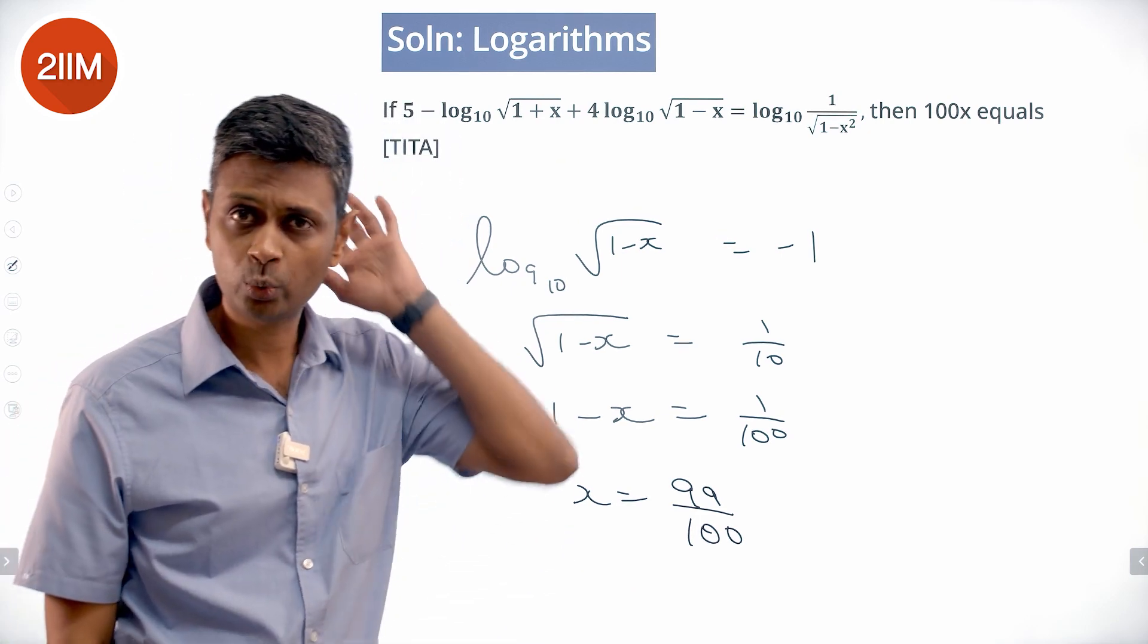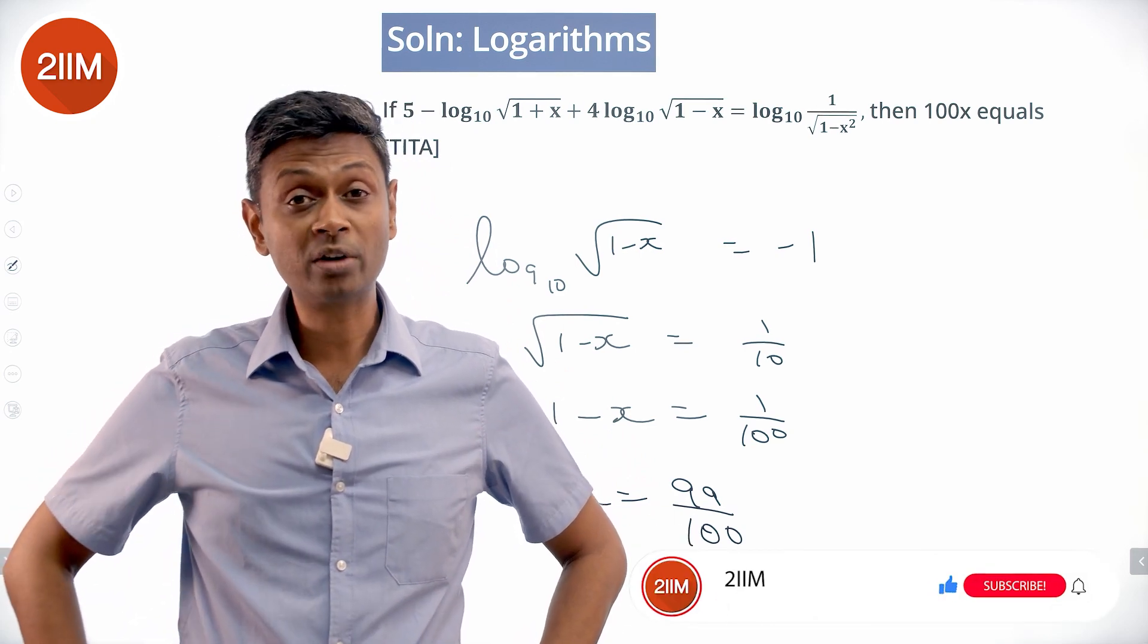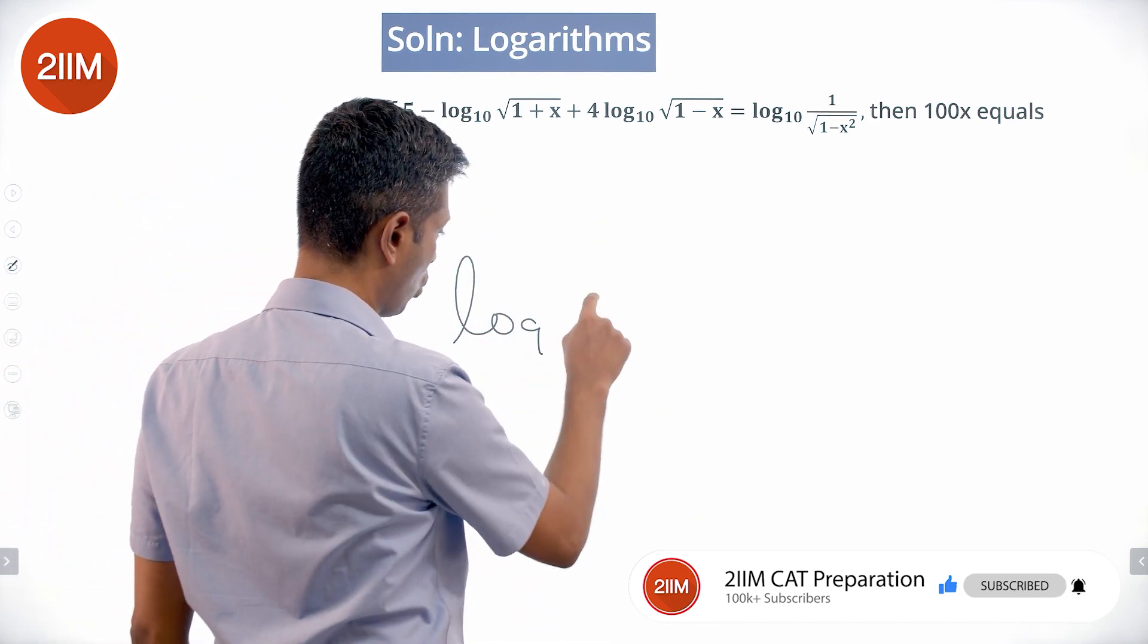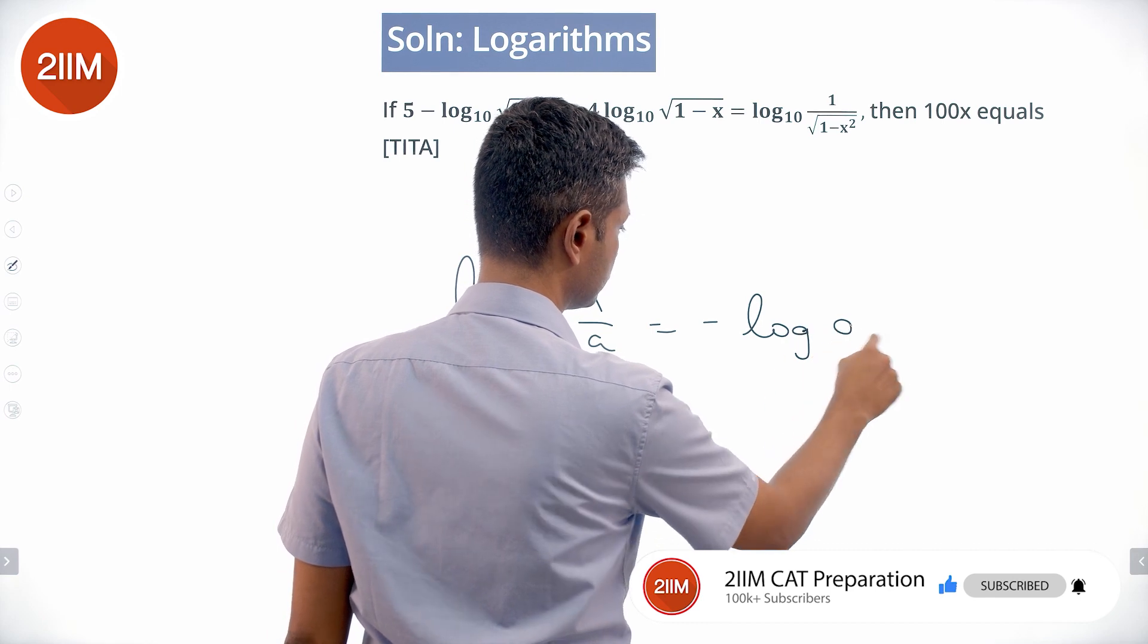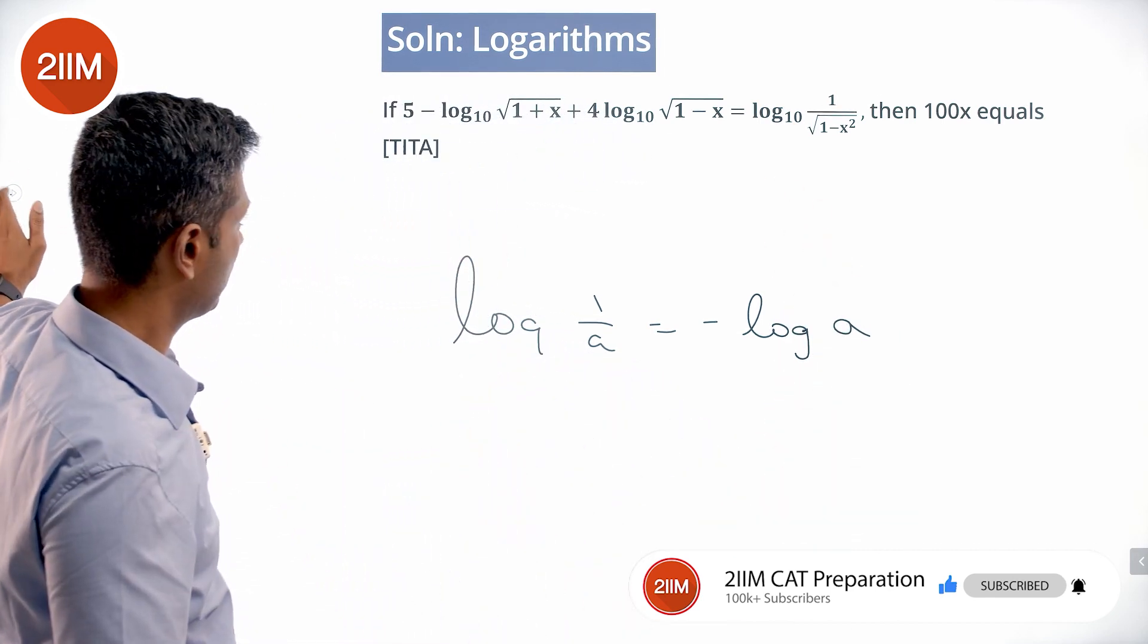Methodically solve this. We are using two ideas. Log a b is log a plus log b. Next idea: log of 1 by a is minus log a. So log 1 by a is minus log a. Log a b is log a plus log b.